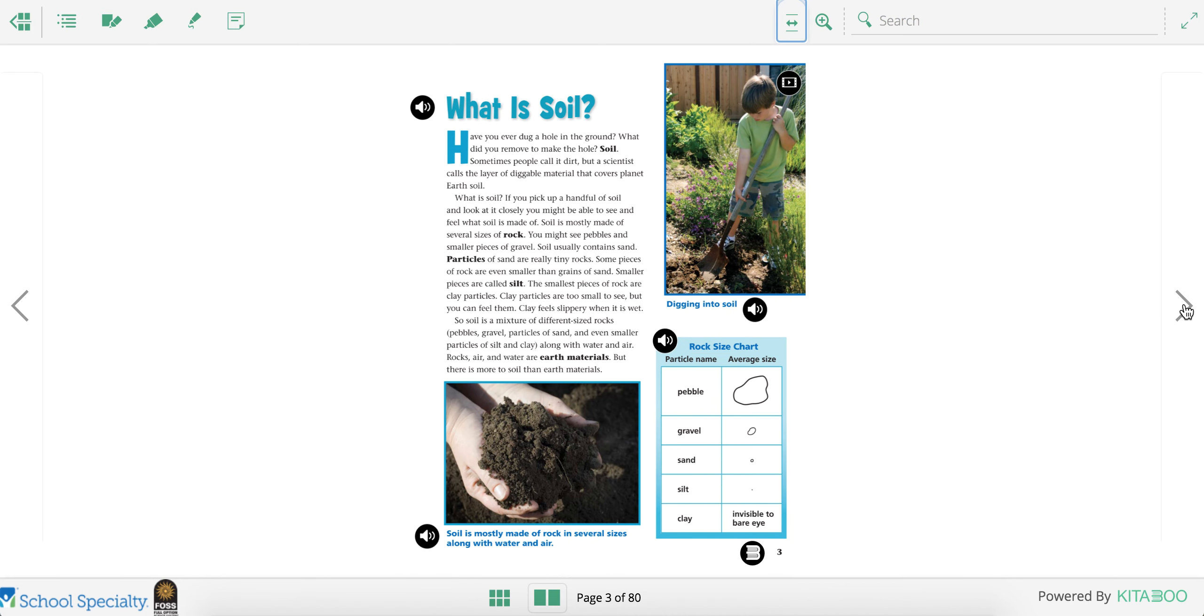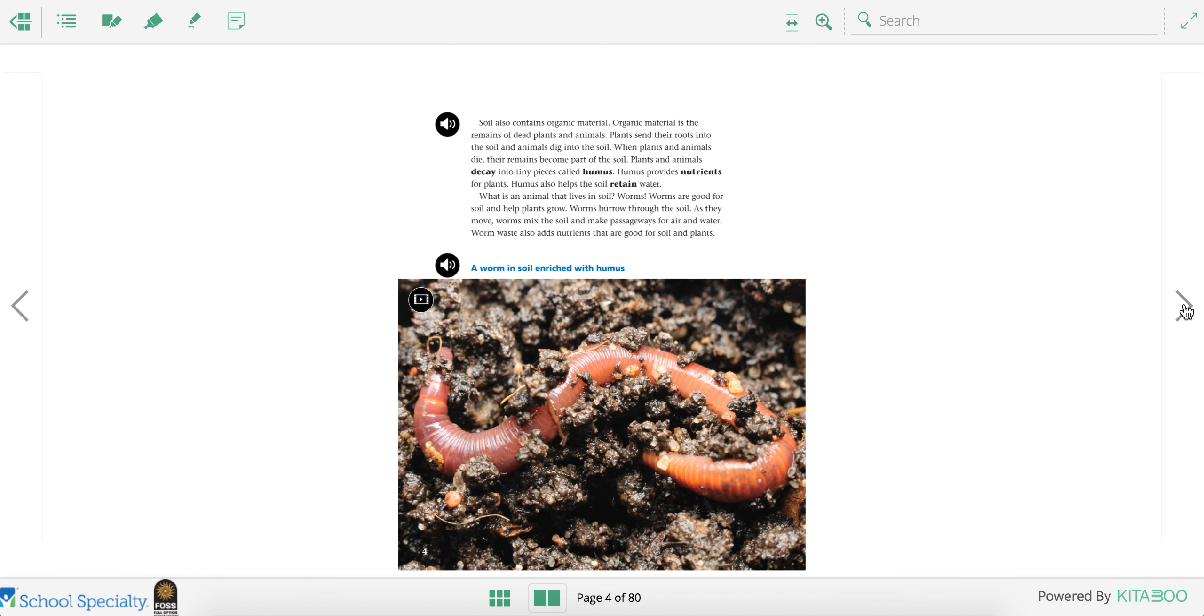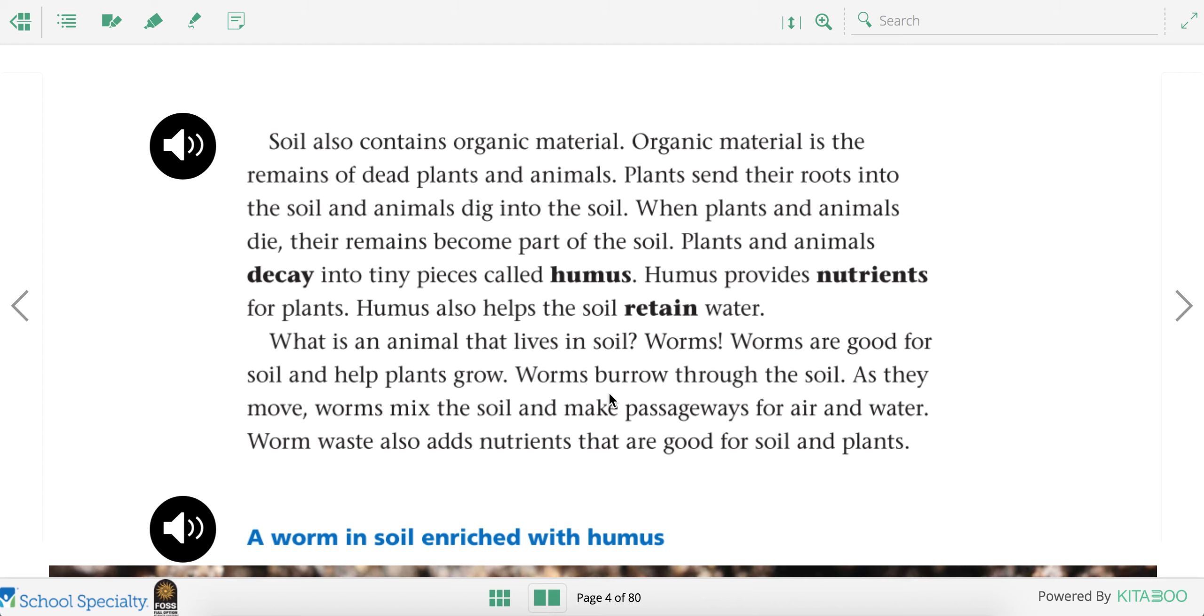Now let's turn to page 4. I'm going to zoom in. And let's listen to it read before we look at the picture. Soil also contains organic material. Organic material is the remains of dead plants and animals. Plants send their roots into the soil and animals dig into the soil. When plants and animals die, their remains become part of the soil.